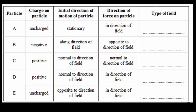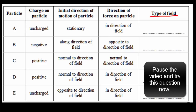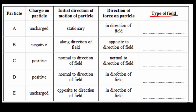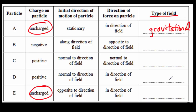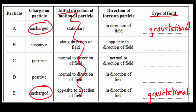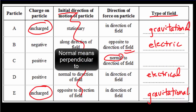Here's an IB question asking what type of field — electric, gravitational, or magnetic — satisfies each condition. First, look at whether the particle is charged: if it's uncharged, it must be the gravitational field, since electric and magnetic fields only act on charged particles. The initial direction of motion has nothing to do with the field itself, so we can ignore that. Comparing force to field direction: force opposite to the field sounds like a negative charge in an electric field; force in the same direction sounds like a positive charge in an electric field. When force and field are normal to one another, you're dealing with a magnetic field.